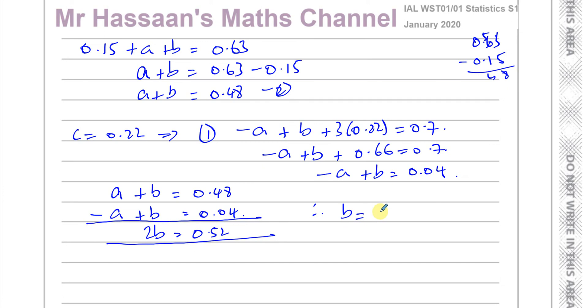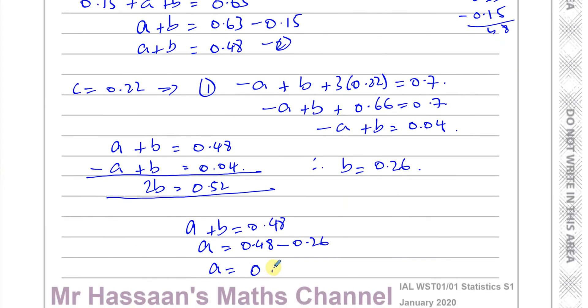If I take these two equations and add them together, I will eliminate the A's. I'll get 2B equals 0.52. Therefore, B equals 0.52 divided by 2, which is 0.26. Then I can find what A is. I know A plus B equals 0.48. So A equals 0.48 minus 0.26. So A is also 0.22.